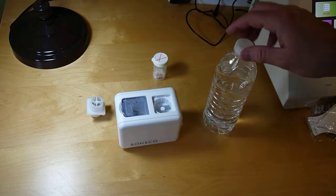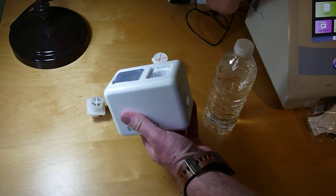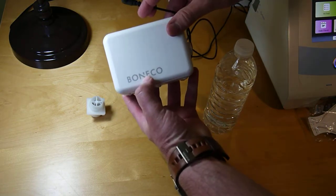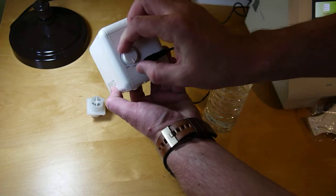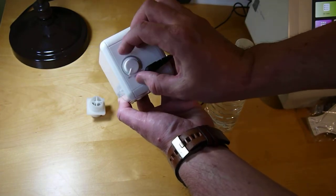To set up the particle generator, first take the power supply that's marked for the particle generator and plug it into the back. This is your control for low up to high.